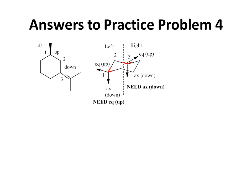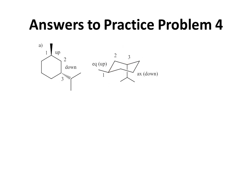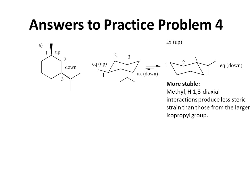Answers to Practice Problem 4. In Part A, we have a methyl group pointing up at position 1 and an isopropyl group pointing down at position 3. In the first conformer, the methyl group at position 1 is equatorial pointing up, and the isopropyl group at position 3 is axial pointing down. In the other conformer, the methyl is axial pointing up and the isopropyl is equatorial pointing down. The more stable conformer is the second one, because we have methyl-hydrogen 1,3-diaxial interactions, which produce less steric strain than those from the larger isopropyl group.